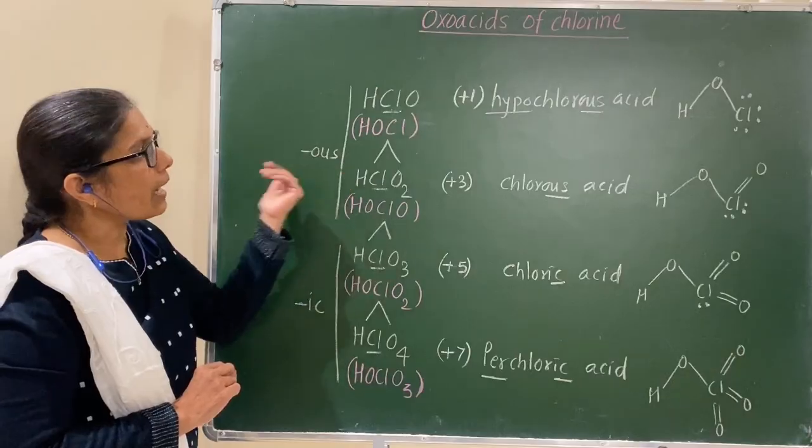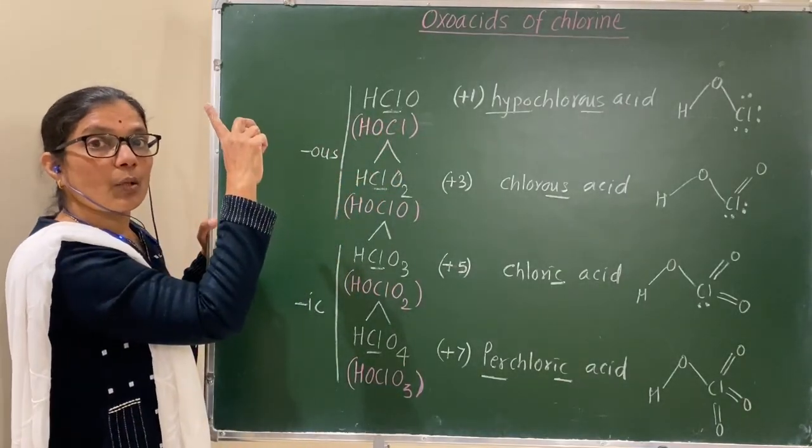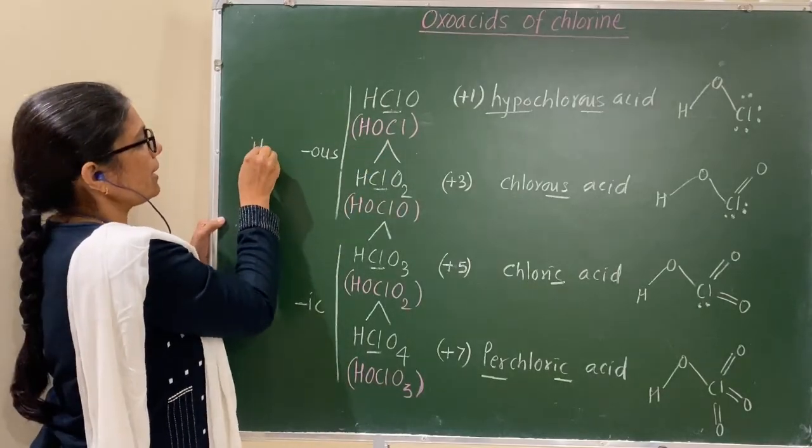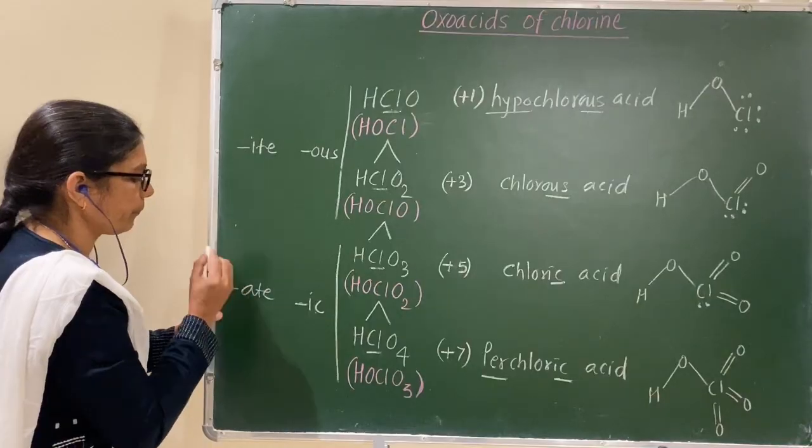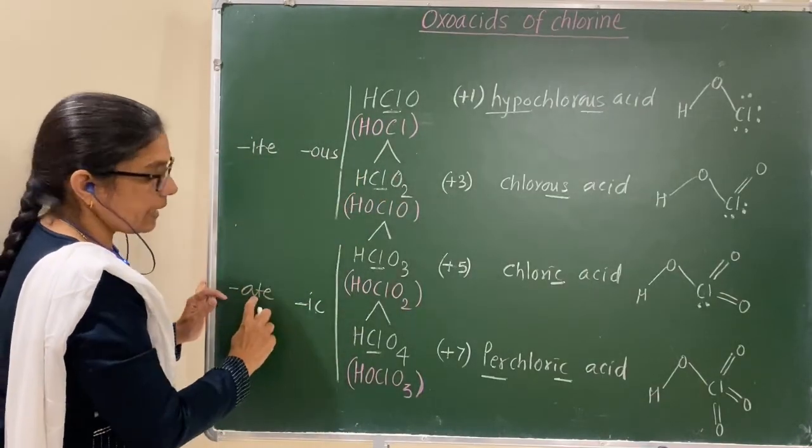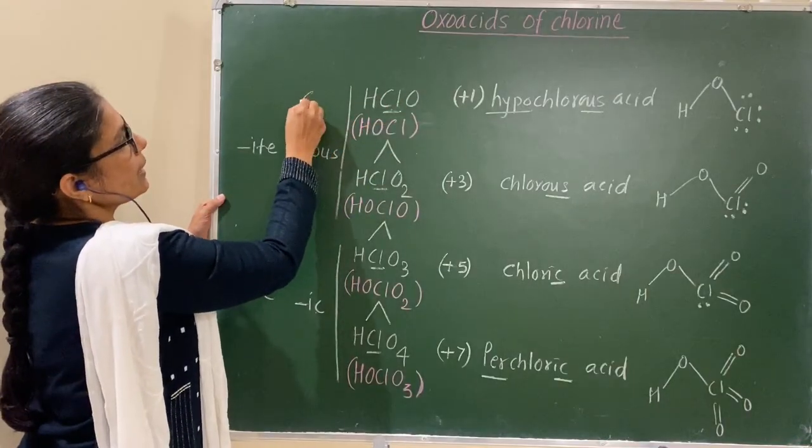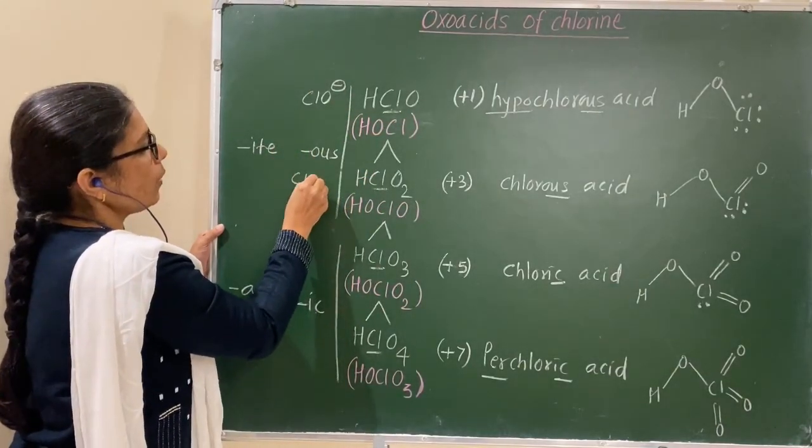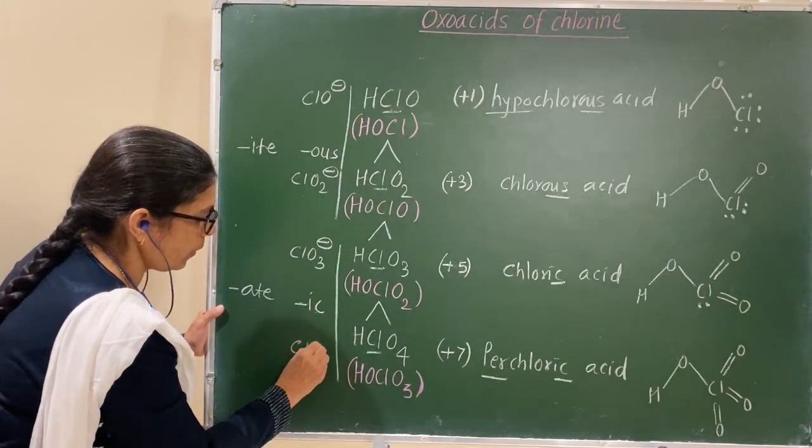Now, consider their ions, that is, their salts, how the salts are formed. See here, you know that we studied in the oxoacids of phosphorus and oxoacids of sulfur. Remember, 'ate' acid gives 'ate' ions, that is, 'ate' salts, while 'ite' acid gives 'ite' ions. Here, 'ite' ions form 'ite' acid, and 'ate' ions form 'ate' acid. Now, here, two ions are formed. This, on removal of H+, gives ClO-. On addition of H+, gives this acid. Here, ClO2 minus. Here, ClO3 minus. And here, ClO4 minus 'ate'.